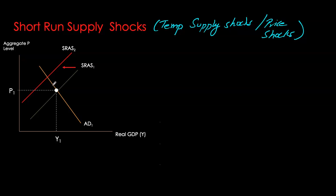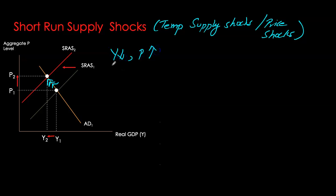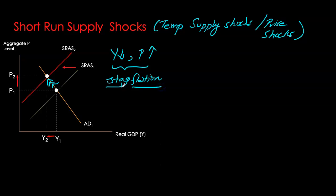As soon as we see short-run aggregate supply decreasing, we have upward pressure on prices, and with higher prices, output demanded decreases. At our new equilibrium, price level is a lot higher but GDP is lower than before. Whenever we have declining output accompanied by a rising price level, this situation is referred to as stagflation — a combination of the words stagnation and inflation. So stagflation is a phenomenon that is the result of a negative supply shock.